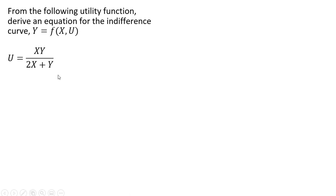So here is the consumer's utility function. We're going to solve this utility function for Y. So I take this 2X plus Y in the denominator and I multiply both sides through by it. I'm just going to simplify the left-hand side.